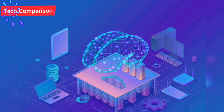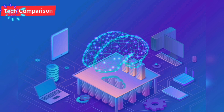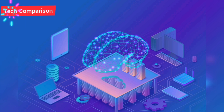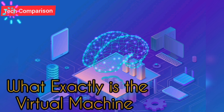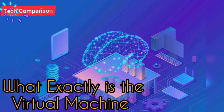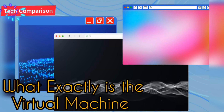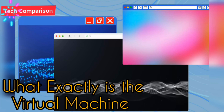Due to this, the user has the liberty of running multiple operating systems on top of the main operating system without the need of buying additional physical resources. A virtual machine is a computer file, usually known as an image, that acts like a real computer.